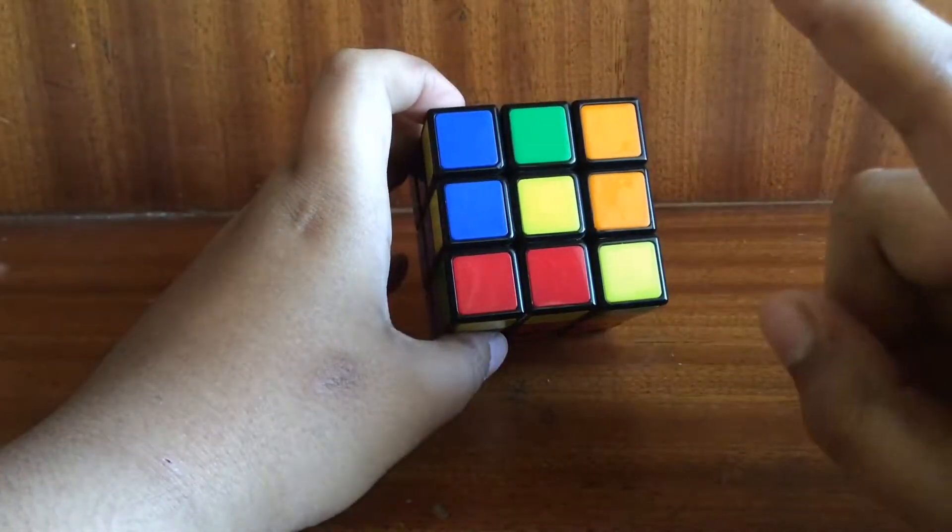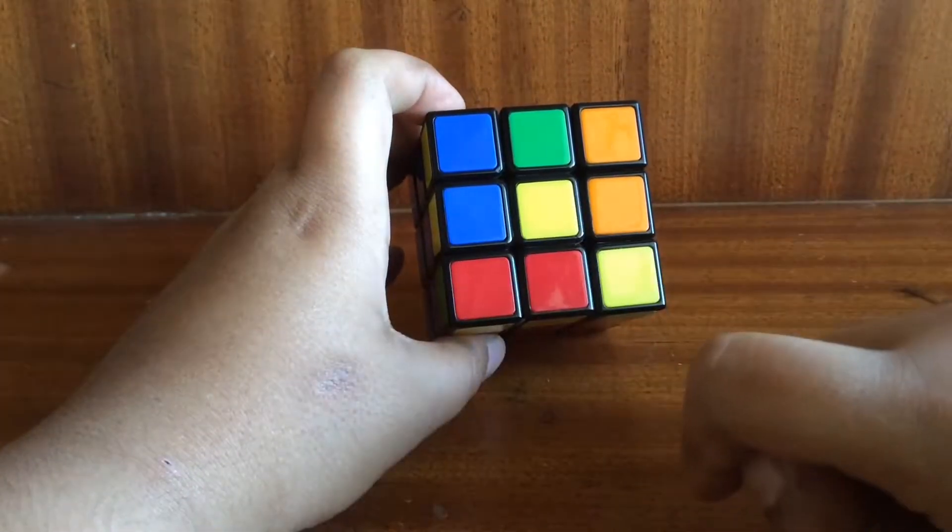In this part first we are focusing on getting a yellow cross, so you have to get a yellow cross and just forget about the rest of the pieces. If you already got a yellow cross then you're lucky and skip this part. So here you can get three situations. One of them is only the yellow center piece.